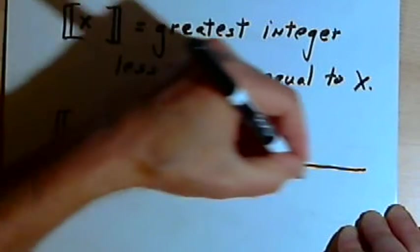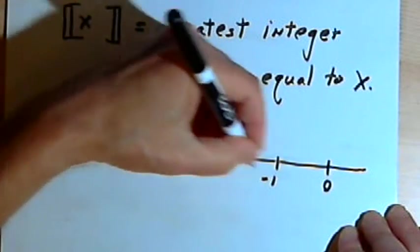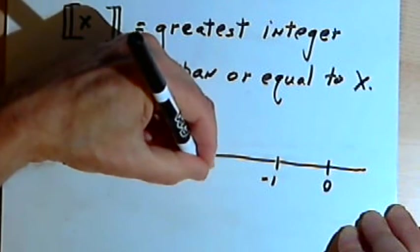So once again, to help me figure this out, I'll draw a number line. Here's 0, negative 1, and negative 2.